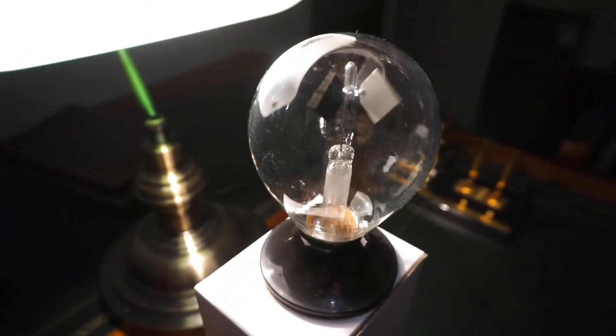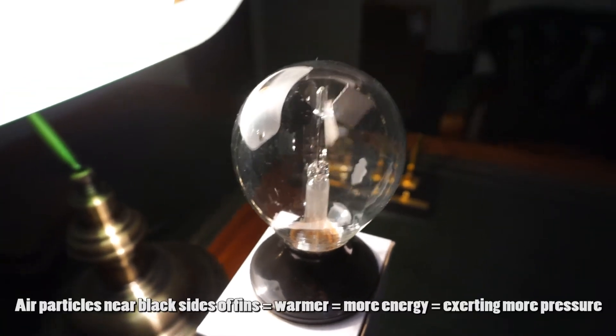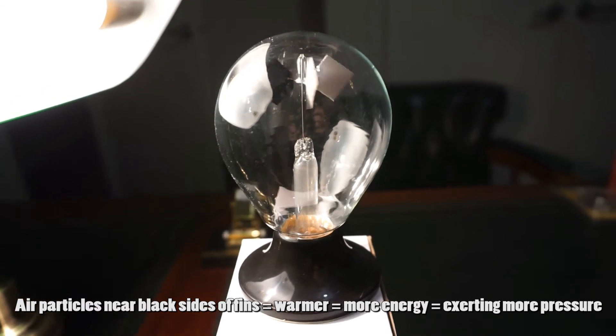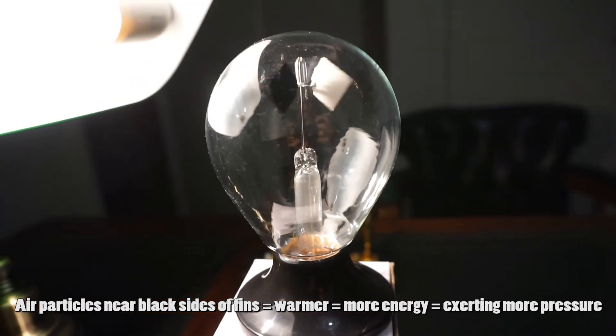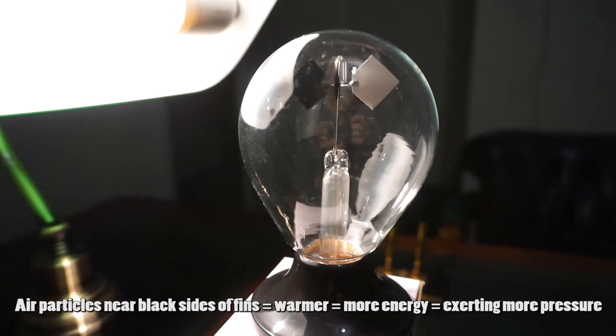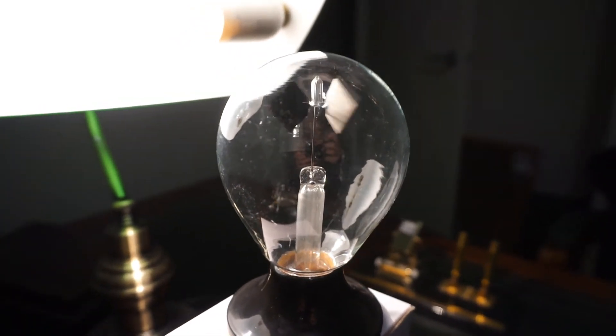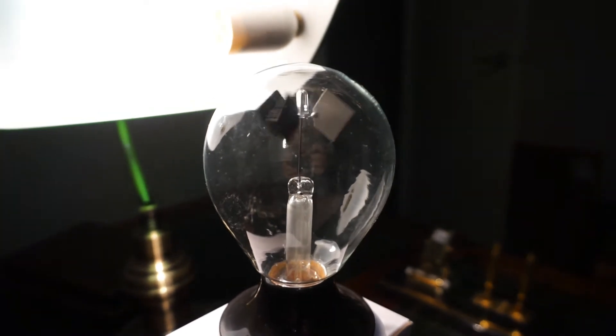The black fins are absorbing more heat and they're getting hotter. So the particles around them have more energy and the particles are hitting those black fins a lot harder and more often and with more force than the particles next to the white fins. And this is really concentrated around the edges of the fin rather than the centers of the fin.